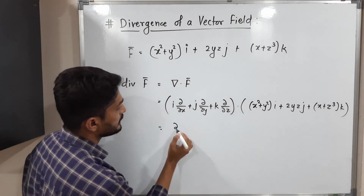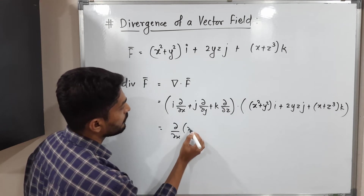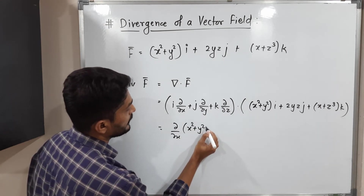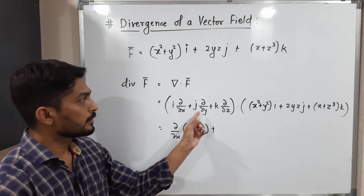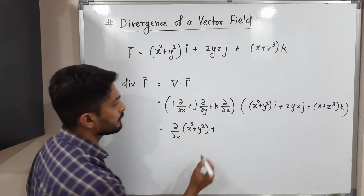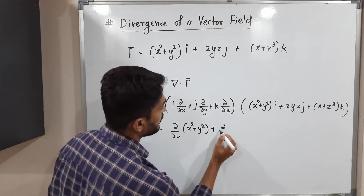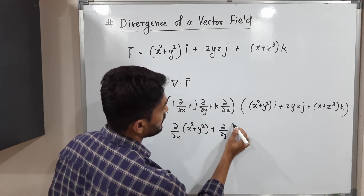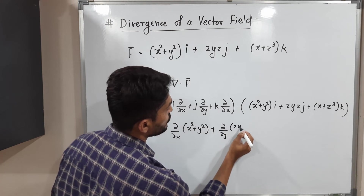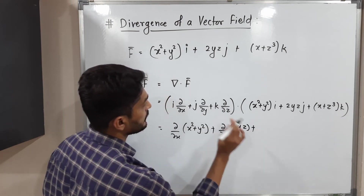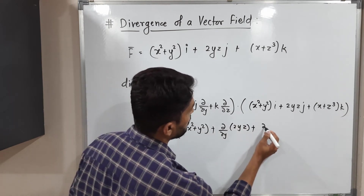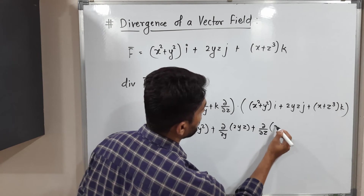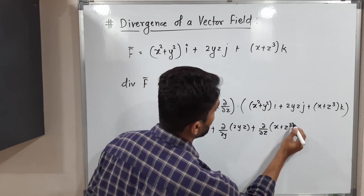Applying the operators: ∂/∂x operates on (x² + y²), giving ∂(x² + y²)/∂x. Then ∂/∂y operates on 2yz, giving ∂(2yz)/∂y. And ∂/∂z operates on xz³, giving ∂(xz³)/∂z.